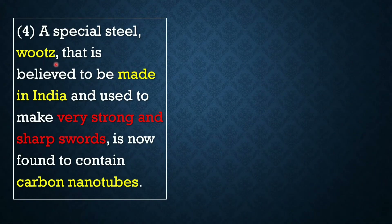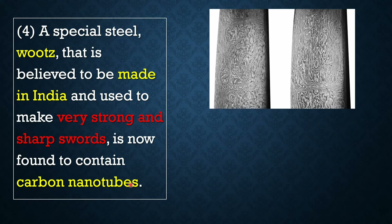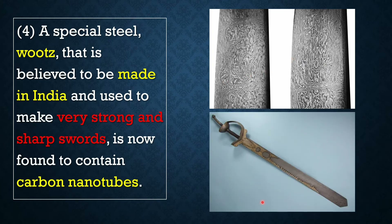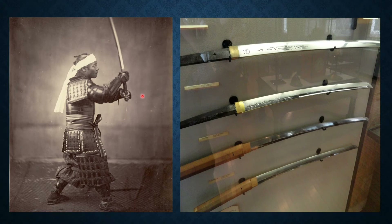A special steel known as wootz steel, believed to be made in India and used to make very sharp and strong swords, is now found to contain carbon nanotubes. You can see here the special wootz steel — these steels were used to make very strong and sharp swords containing carbon nanotubes. Just imagine, carbon nanotubes were used to make swords in that era, and we are still studying carbon nanotubes today. You can see a warrior carrying a sword, and different other swords used in ancient times that may have contained various nanomaterials as well.